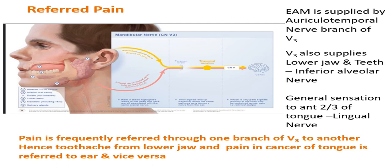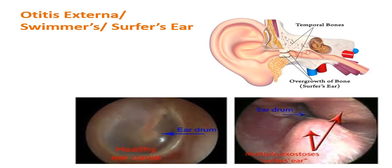Otitis externa, or swimmer's ear/surfer's ear, results from chronic infection of the external acoustic meatus due to prolonged exposure to water or cold winds. Repeated infections cause bony overgrowth or hypertrophy of the underlying bone, resulting in narrowing of the bony canal, pain, and impeded sound transmission. In such patients, the eardrum cannot be seen clearly due to this bony overgrowth.